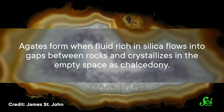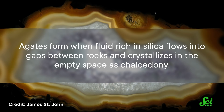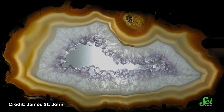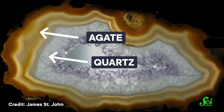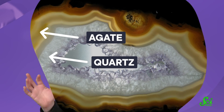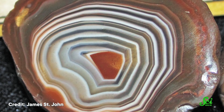Agates form when fluid rich in silica flows into gaps between rocks and crystallizes in the empty space as chalcedony. This material is composed of smaller, sometimes even microscopic, mineral crystals, like quartz. The fluid isn't magma or anything extreme — agates form from fluids between 20 and 230 degrees Celsius, long after the surrounding rock has cooled. This can happen in many types of rock, but they're most common in volcanic rocks.